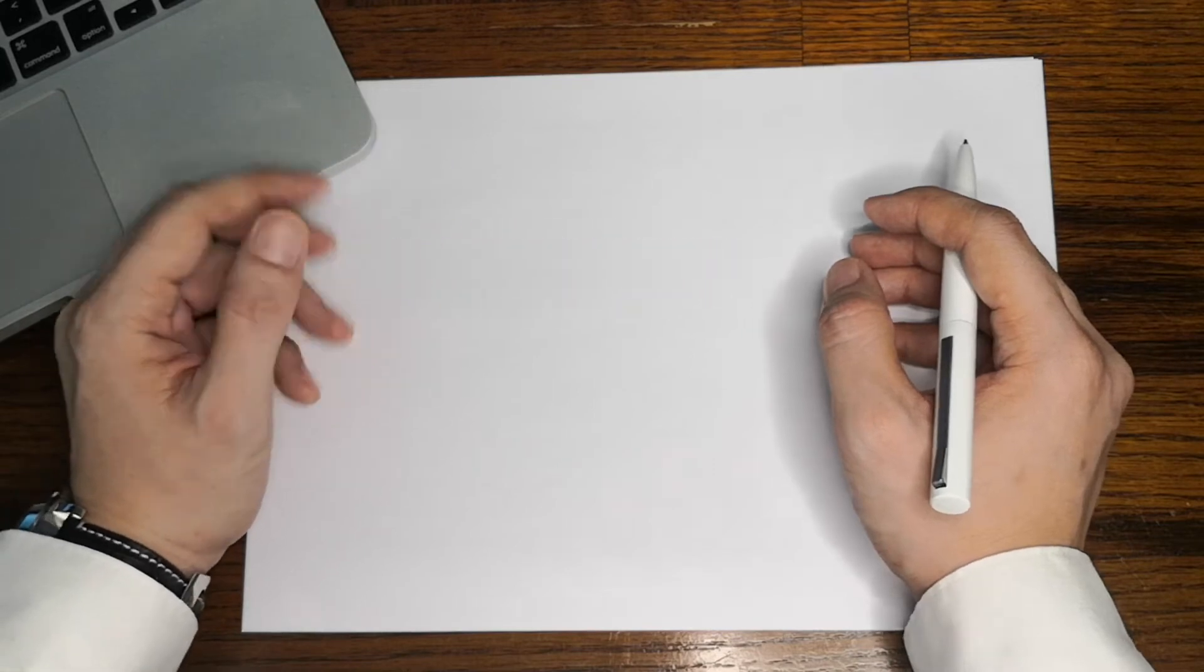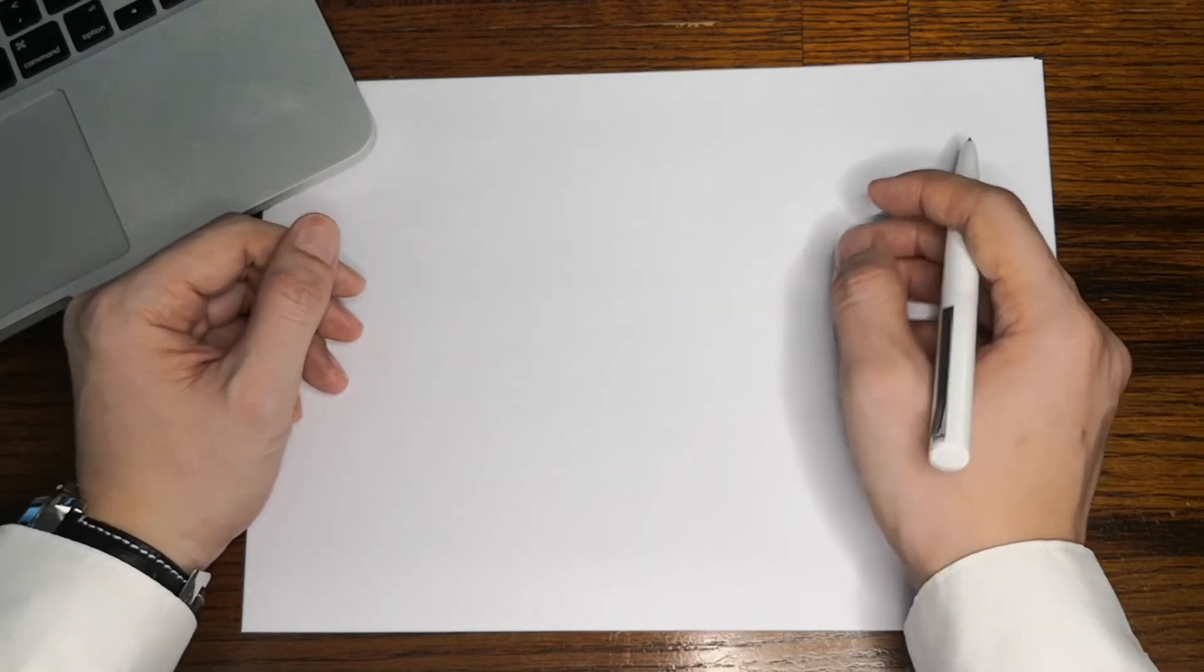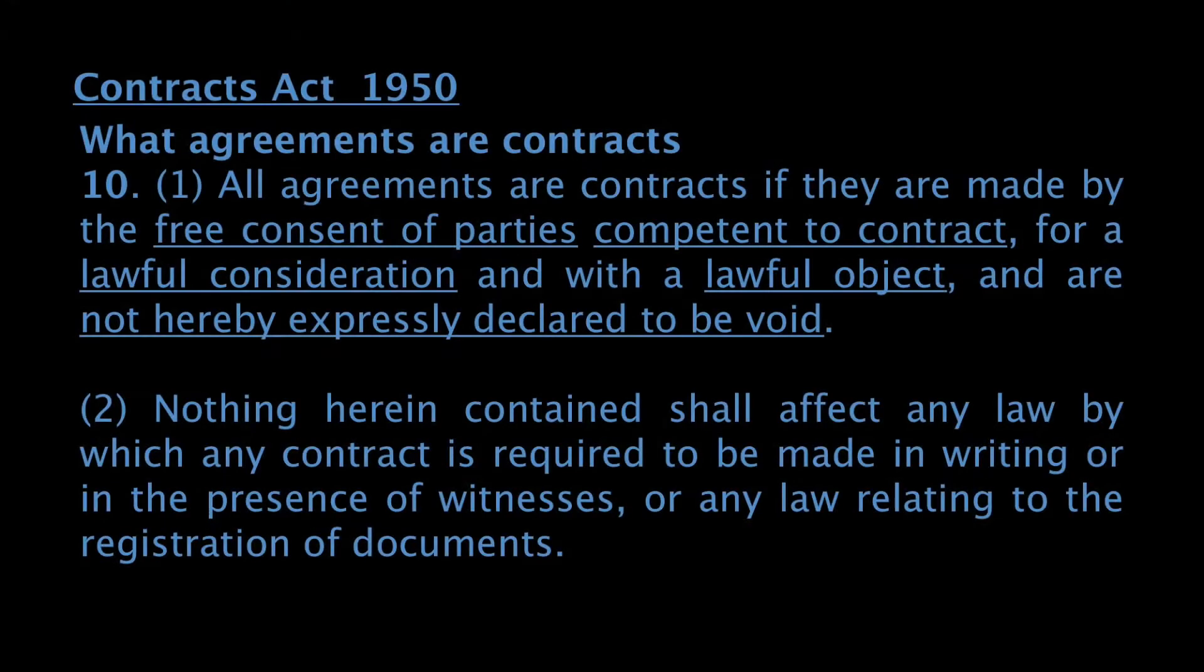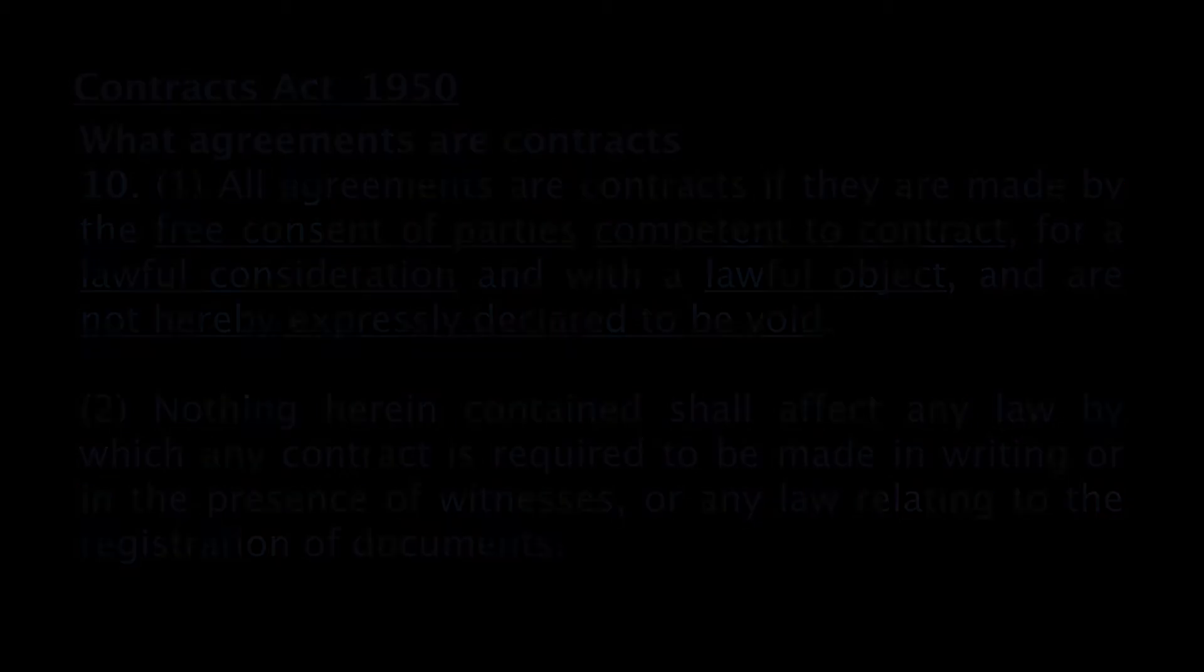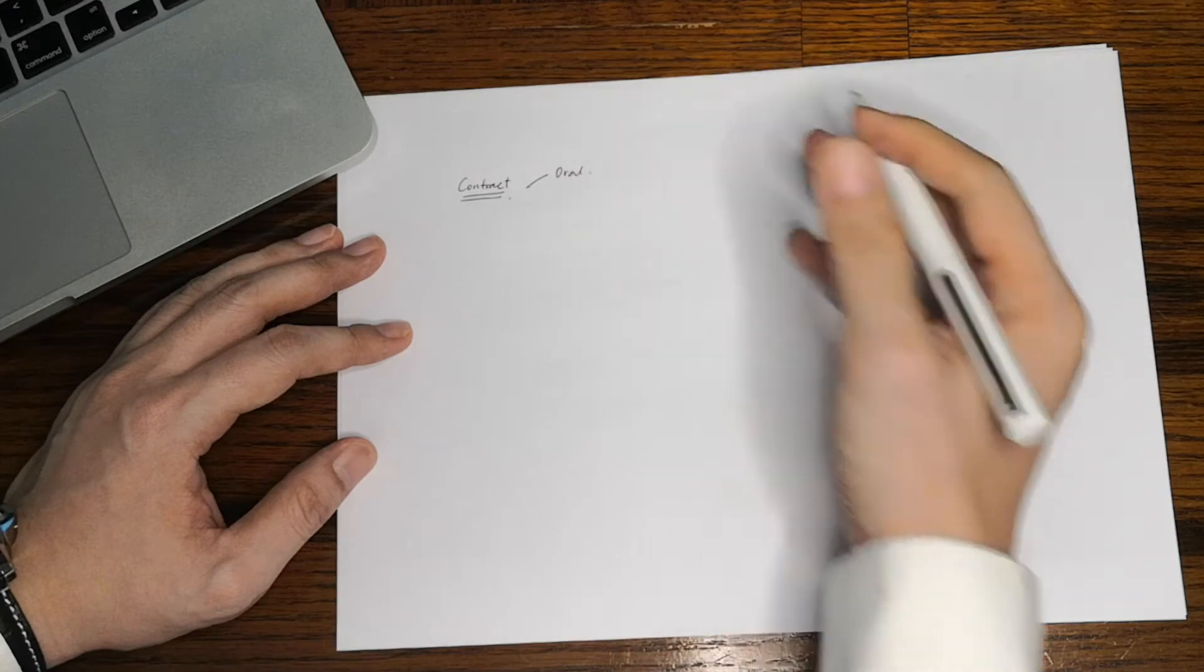For agreements where the parties intended it to be binding and valid, it must be made by the consent of the parties competent to contract, for lawful consideration, and with a lawful object. It can be either in oral form, also known as a gentleman's agreement, or written form.